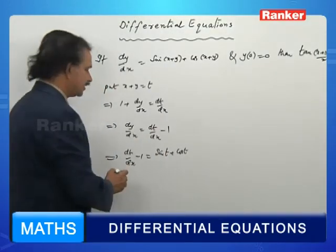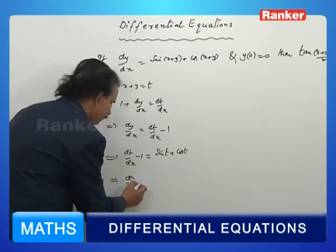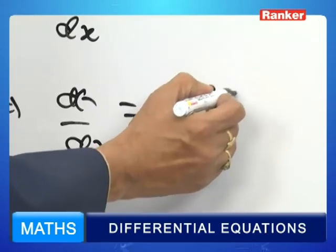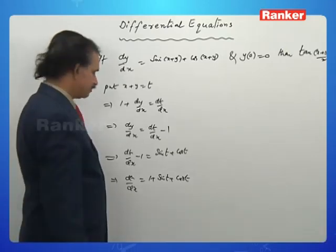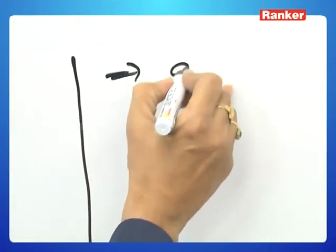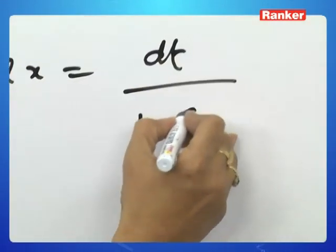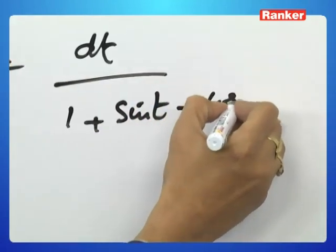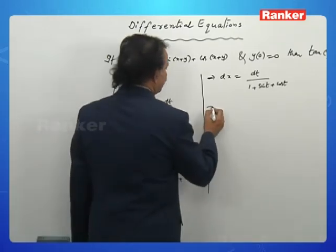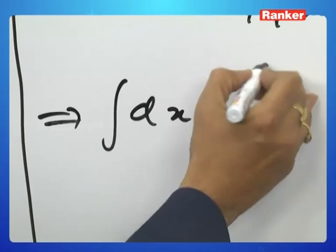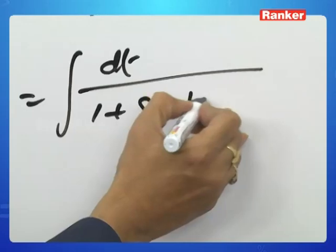Substituting gives dt/dx minus 1 equals sin(t) plus cos(t), so dt/dx equals 1 plus sin(t) plus cos(t). From this, dx equals dt divided by 1 plus sin(t) plus cos(t). Integrating both sides: integral of dx equals integral of dt over (1 plus sin(t) plus cos(t)).